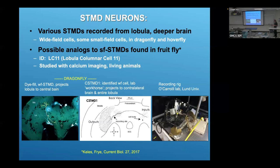Interestingly, there have been possible analogs to these small-field STMDs found in the fruit fly. The cells are called lobular columnar cells 11. They hold a lot of hope for studying the mechanisms behind these sorts of cells because we have very sophisticated genetic tools in fruit flies that enable things like calcium imaging and studying multiple cells at the same time. Fruit flies don't engage in the sort of aerobatic flight we saw with the other animals, but they do have to see other fruit flies flying around, so it's not surprising they have some small target detection capability.